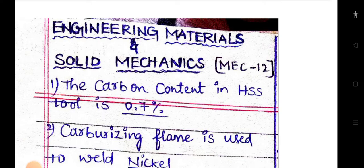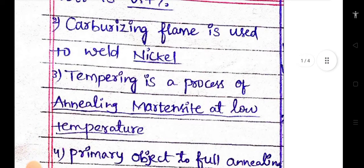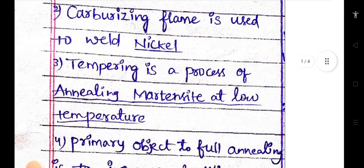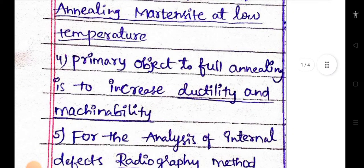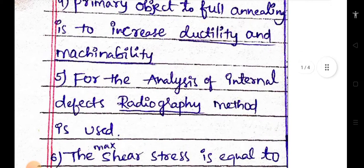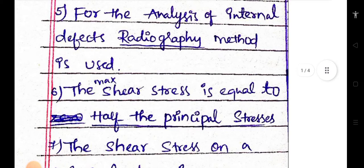Coming to the topic, first of all the carbon content in HSS tool is 0.7%. Carburizing flame is used to weld nickel. Tempering is a process of annealing martensite at low temperature. Primary object to full annealing is to increase ductility and machinability. For the analysis of internal defects, radiography method is used.